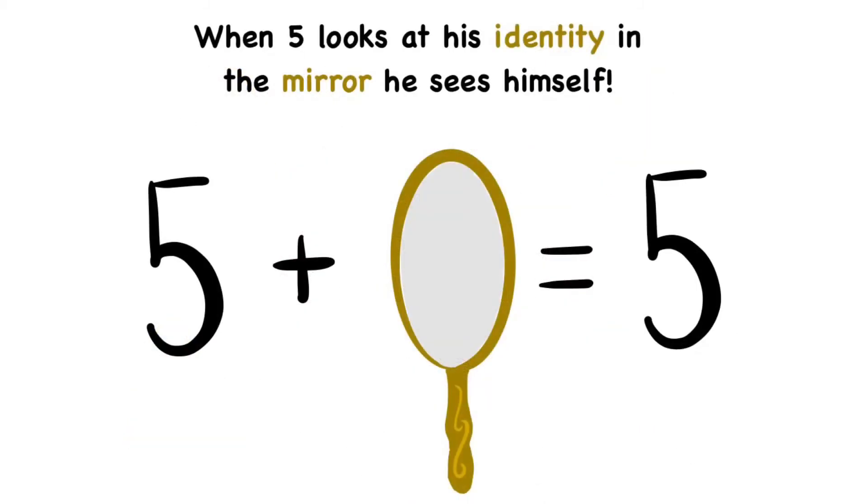Now, a really easy way to remember this property is that when 5 looks at his identity in the mirror, he sees himself. And when you look at your identity in the mirror, you see yourself.